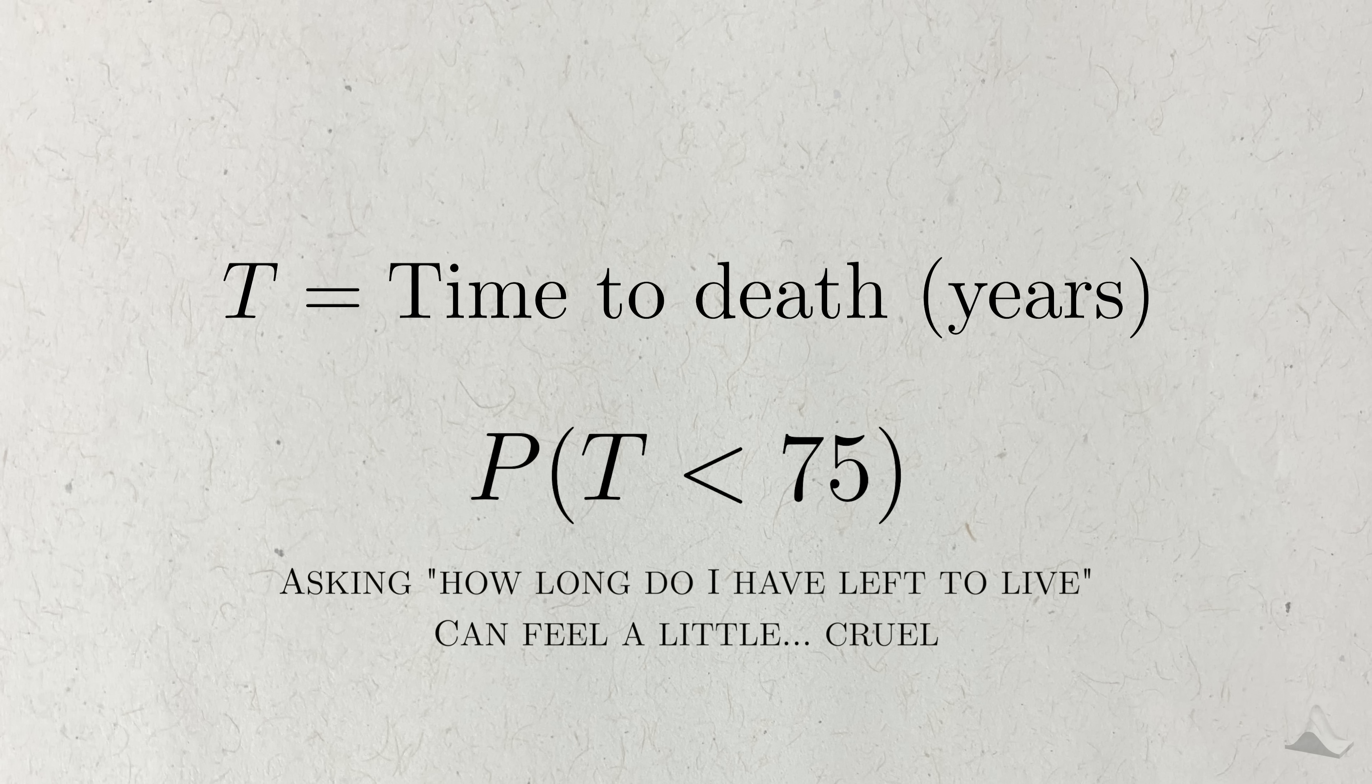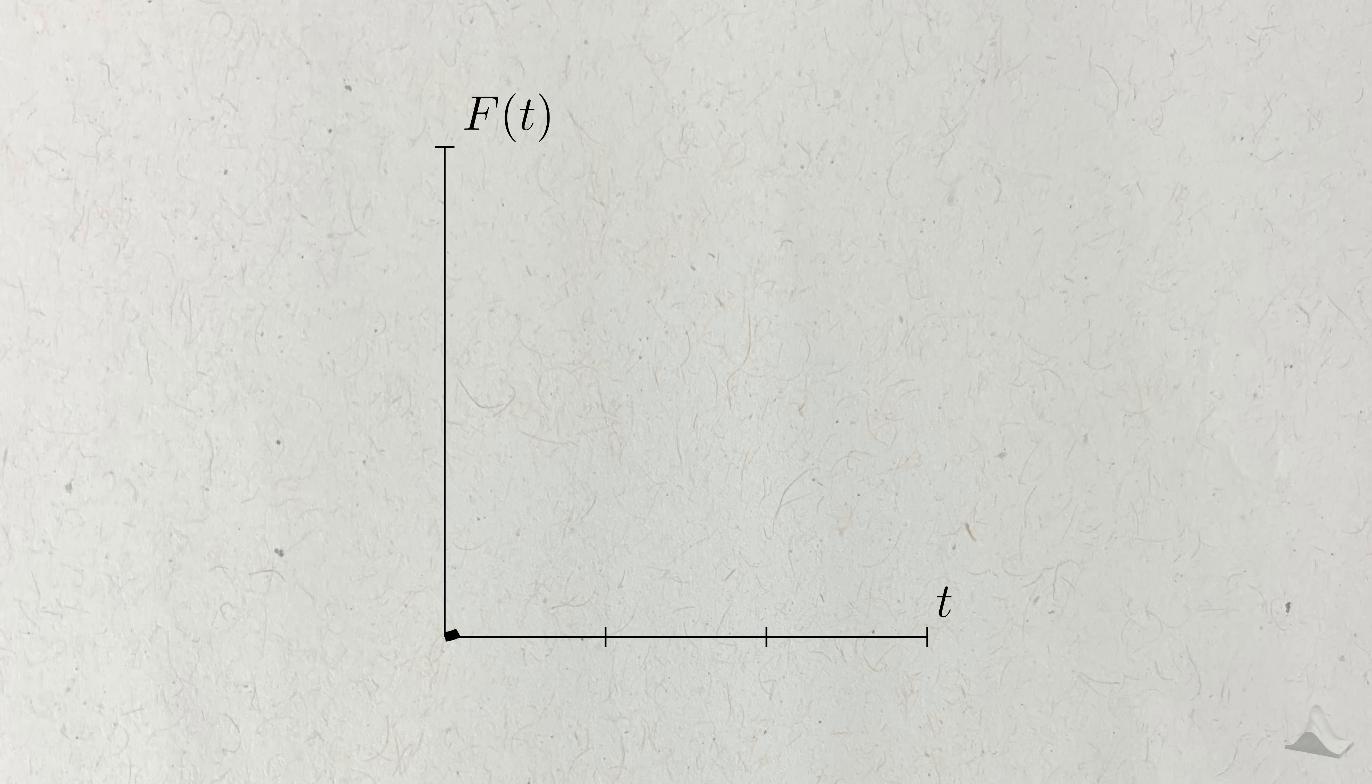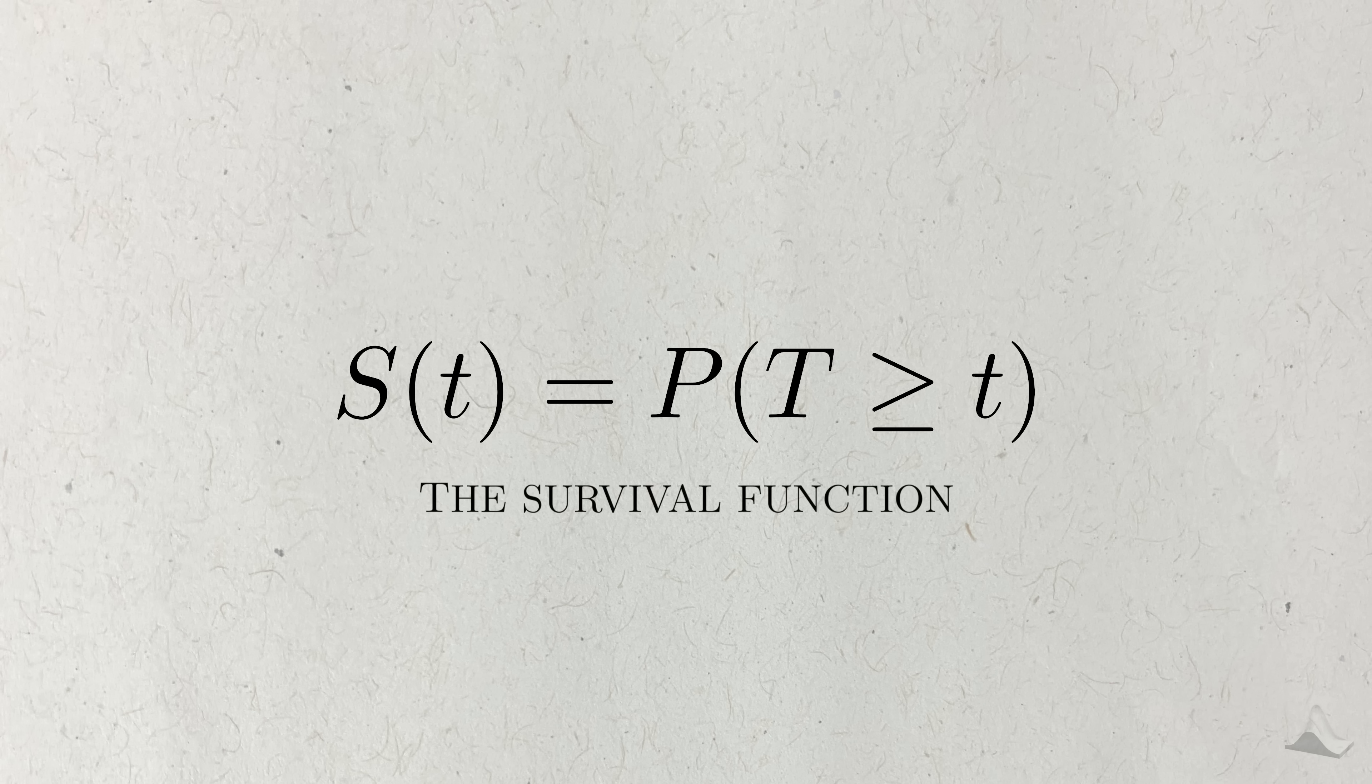But even in that case, asking if we'll die before some age can feel a little cruel. This would not be the way you'd want to hear about it at your doctor's office. Instead of asking what's the probability of living until 75, we'd prefer to know the probability of living past it. This amounts to flipping the sign to being greater than or equal to, but in terms of the cumulative distribution, we're getting this probability to the right of a given time point. This particular function has a special name, the survivalship or survival function.